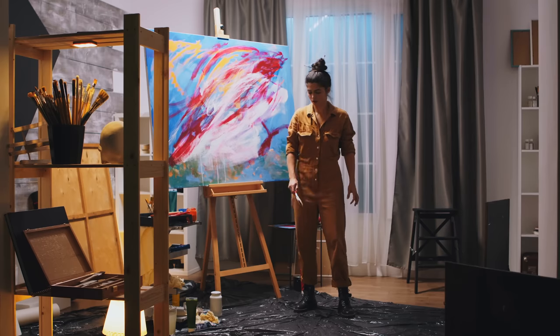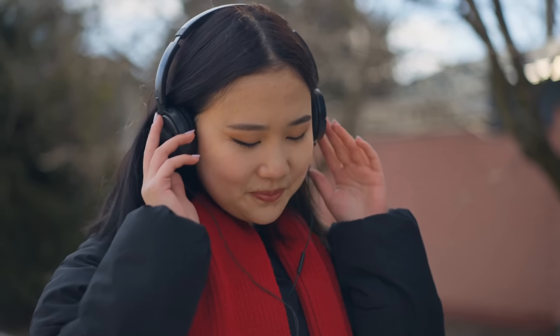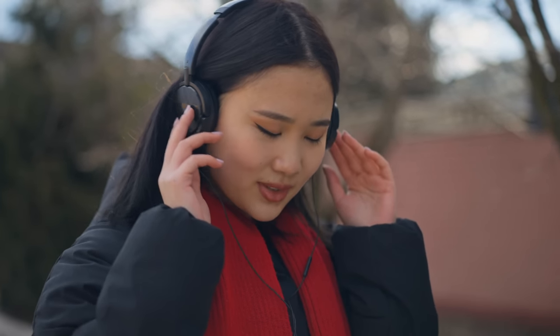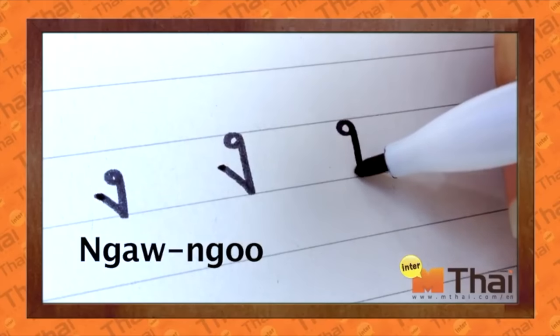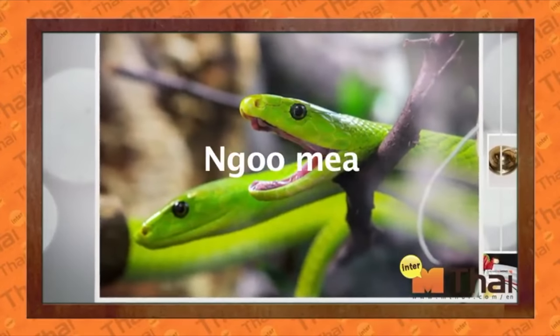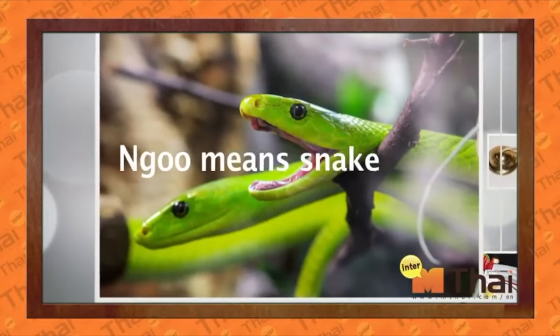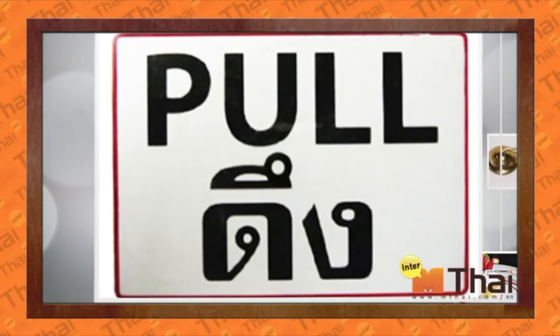The idea that some of us are visual learners and some of us are auditory learners is a myth. Instead, what we're finding out is that most people are going to learn better when different types of stimuli are grouped together. So presenting text with images and even sound is going to make that even more meaningful for us and easier to remember and retain.